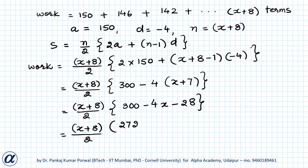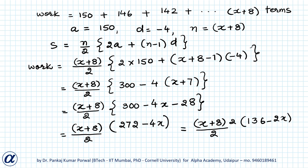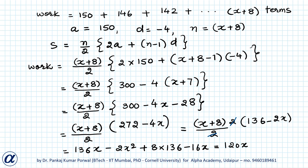Taking 2 as a common factor: (272 − 4x) = 2(136 − 2x), so the expression becomes (x + 8)/2 × 2(136 − 2x). The two cancels, and multiplying out gives: 136x − 2x² + 8 × 136 − 16x, which equals 120x − 2x² + 1088. This is the total work done when workers were dropping out.